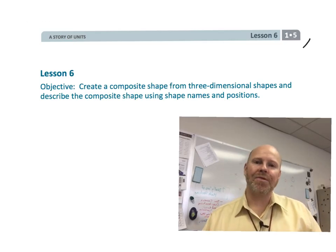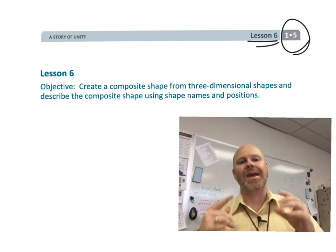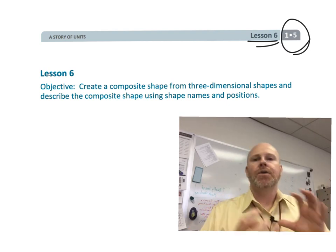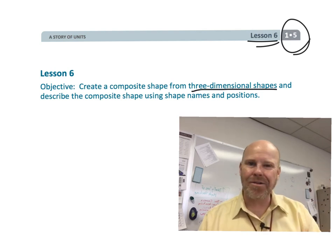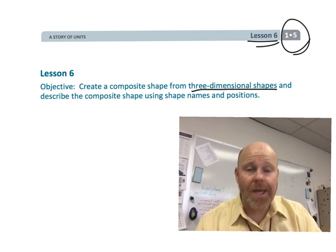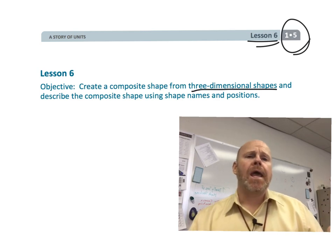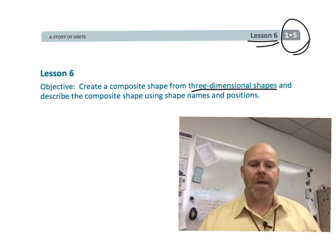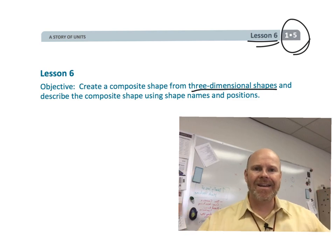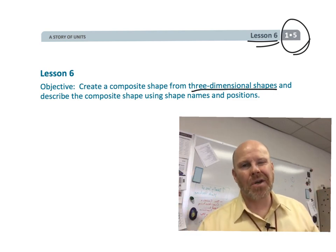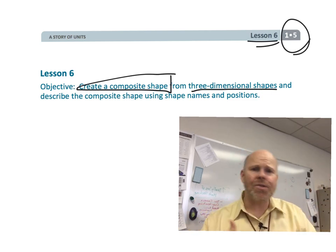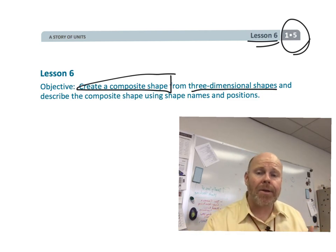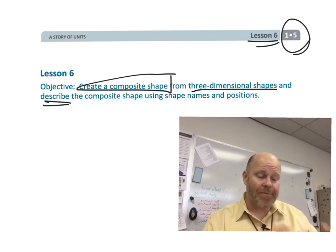All right, this is first grade, module 5, lesson 6. In this lesson, we're going to return to three-dimensional figures. You're going to need to get your cones, your spheres, your rectangular prisms, your cylinders, your cubes — get all those things back. We are going to have our students put those things together to build magnificent structures, which we're going to mathematically call composite shapes. And then our students are going to practice using vocabulary to communicate what they've made with each other. So let's get started.